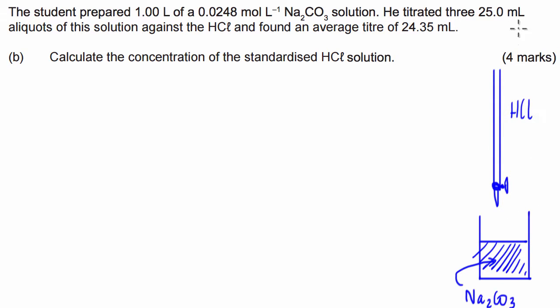We've been given the fact that we have three 25 mL aliquots of this solution against the hydrochloric acid and found the average titration volume was 24.35 mL. Alright, so let's see how we're going to do this.